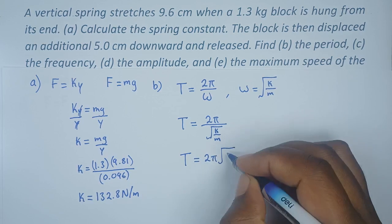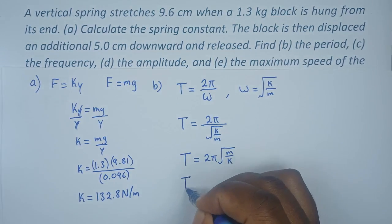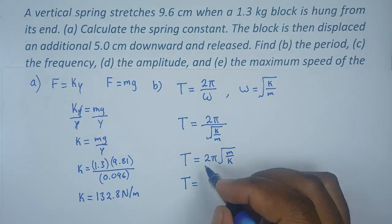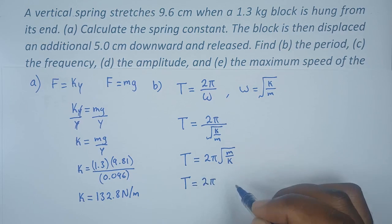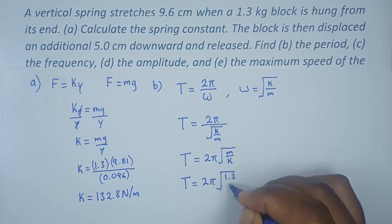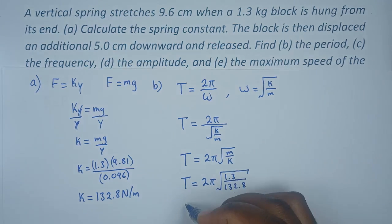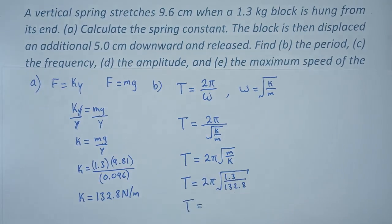We can do our substitutions here to say period will be given by 2π times the square root of mass 1.3 over spring constant 132.8. Let's compute the period and we obtain a period of 0.62 seconds.